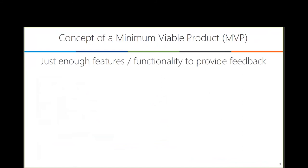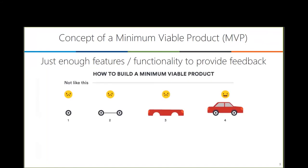In the prototype phase, what we are focusing on is MVP — minimum viable product. We want to provide our customers, our users, our learners, just enough features or functionality so that they can provide feedback for us. Imagine that you are trying to solve a transportation problem. You can't just create a tire and give your customers the tire to react to, or even the frame of the vehicle.